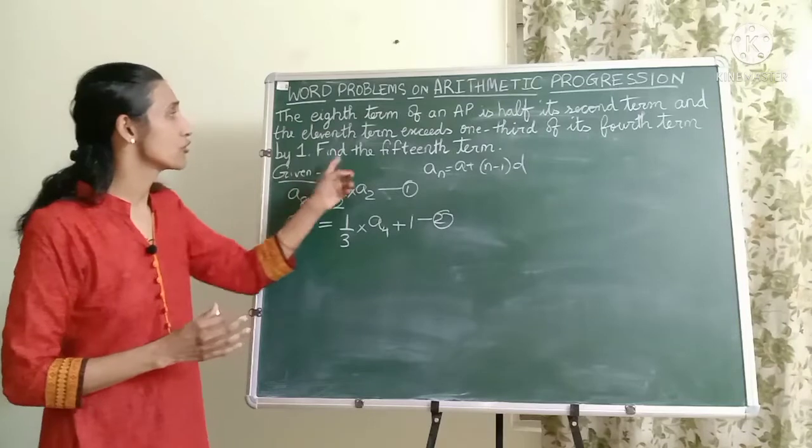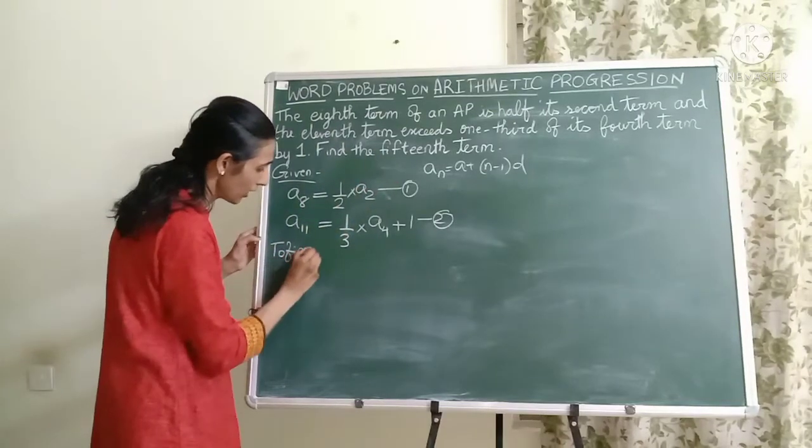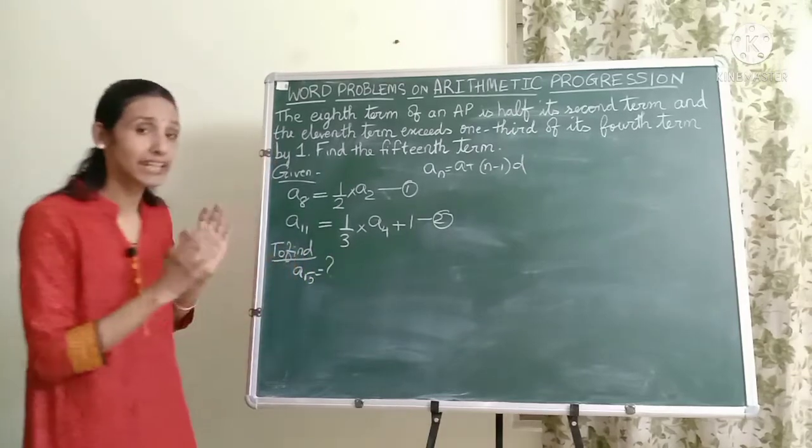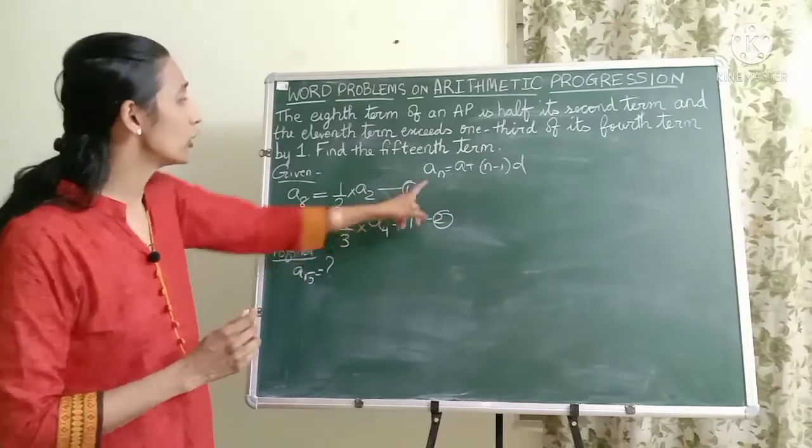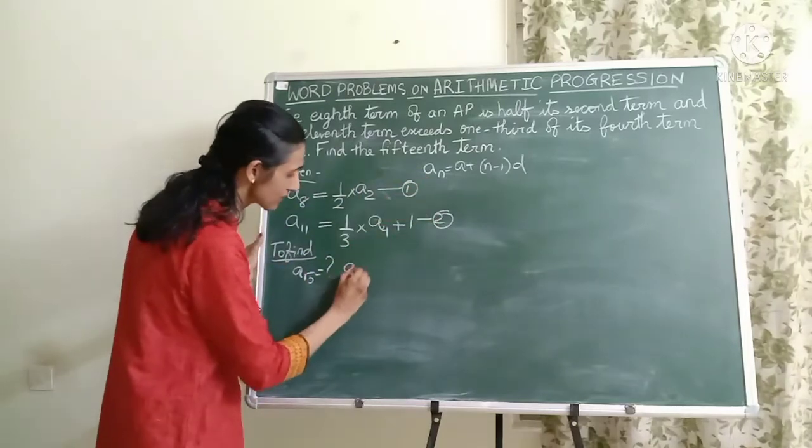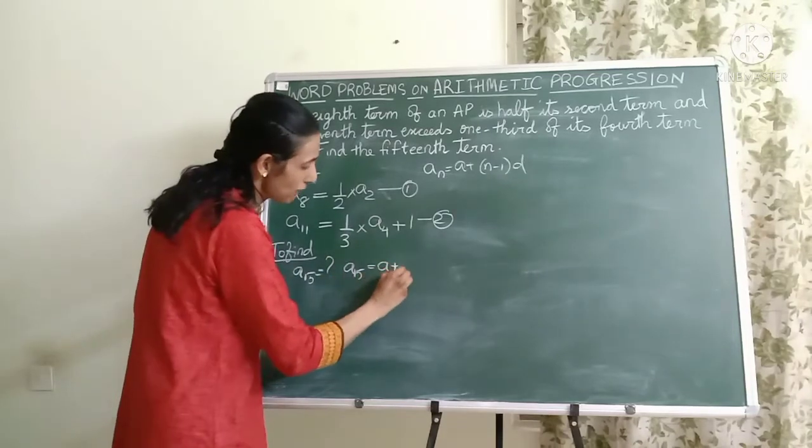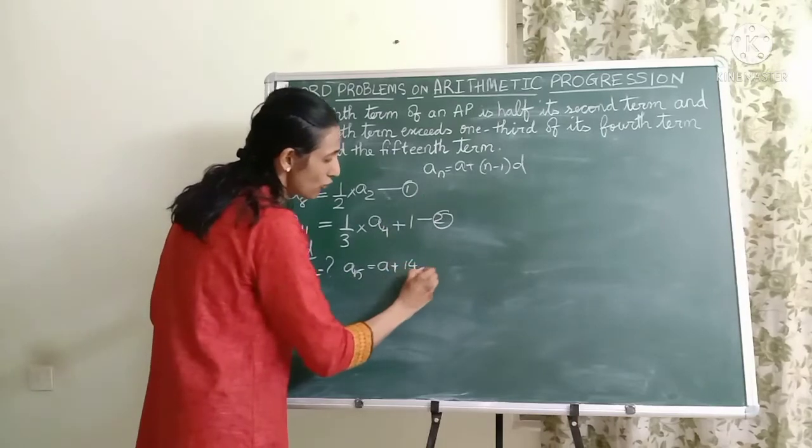Then they are asking us to find the 15th term. So what do you have to find? To find A15. Now let's take a look at the formula. If I put N equal to 15 here, then what is the expression I get? I get A15 equal to A plus 15 minus 1 which is 14D.